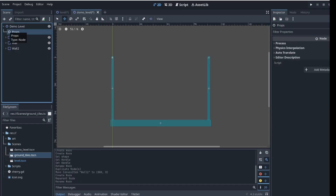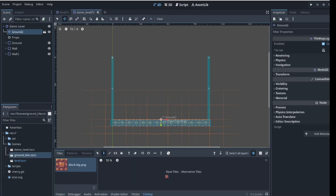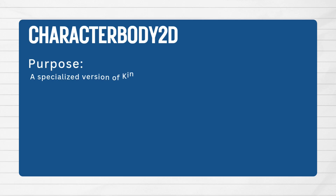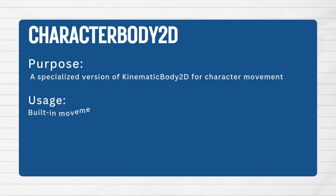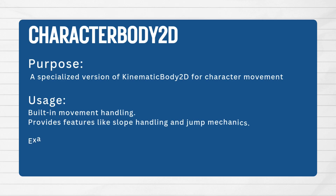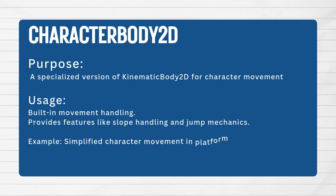With that done we can now get started on the player, and a great node to use for this is the CharacterBody2D node. It has built-in movement handling and can also take advantage of built-in functions like move_and_slide, which does most of the heavy lifting in terms of the physics engine, so we don't need to write a lot of code. That said, if you're comfortable coding your own physics, there's nothing stopping you.